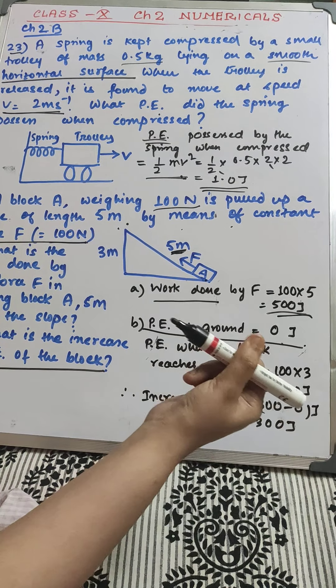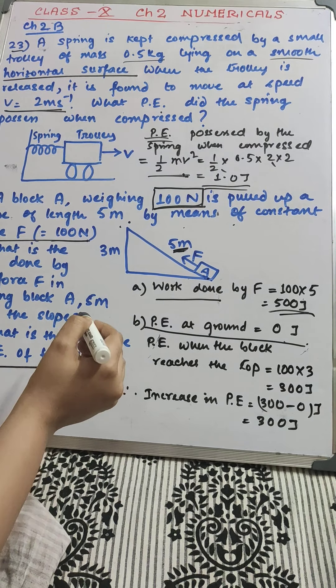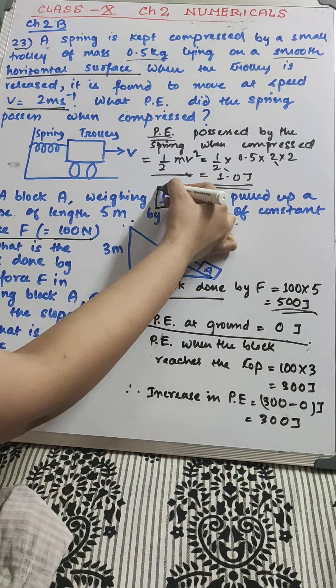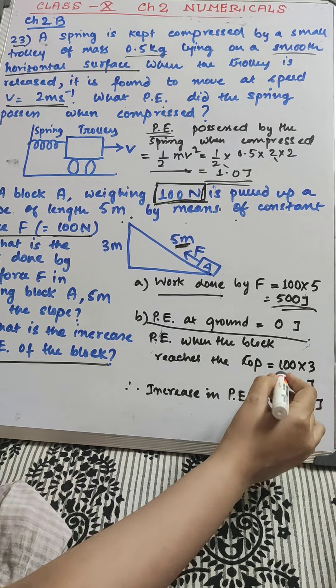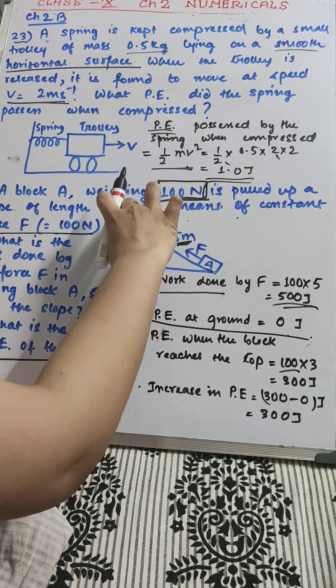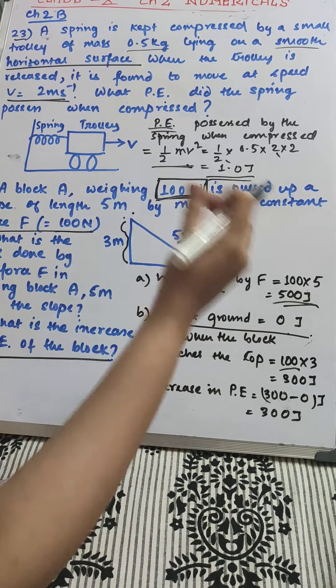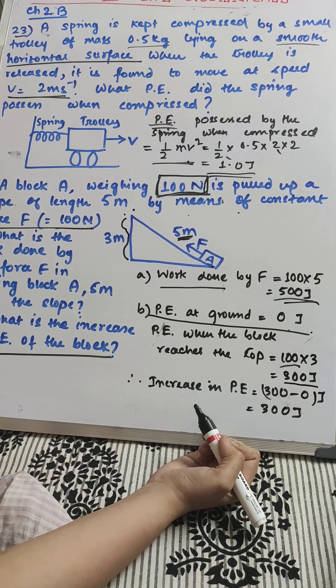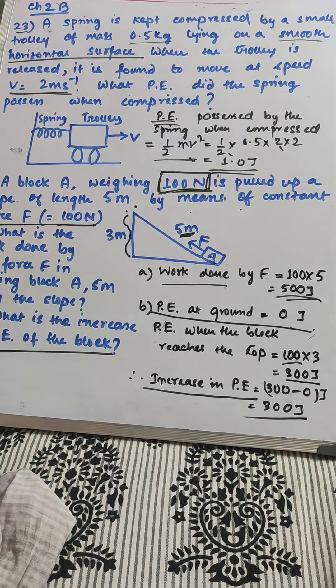Mg is already given. If I multiply G with mass, we will get the weight. So, this is already given 100 N, into 3 because this is the height at which the block is now placed. 300 Joule. Increase in potential energy is simple: 300 minus 0, 300 Joules.